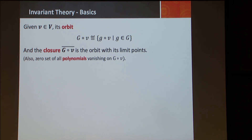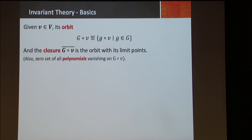Since there's algebra involved, the important objects are the closures of these orbits — essentially the orbit with its limit points. You can think of limit points in the Euclidean topology: whatever you can reach closer, throw that into the orbit closure G·V-bar. There is a correction: just take the orbit and add its limit points.